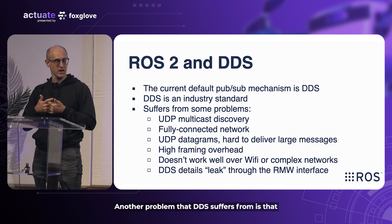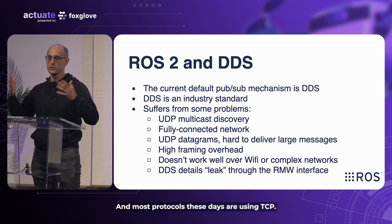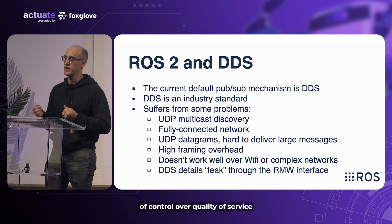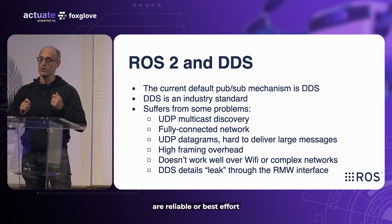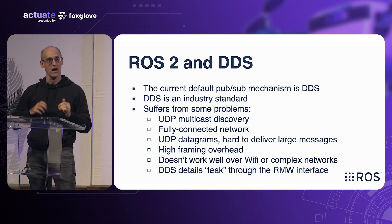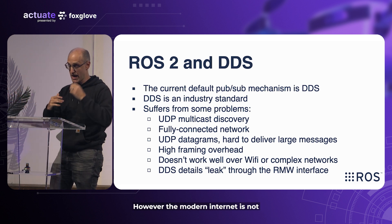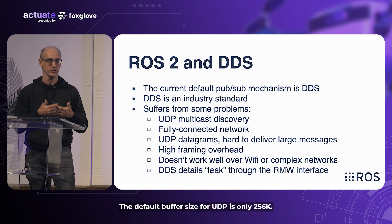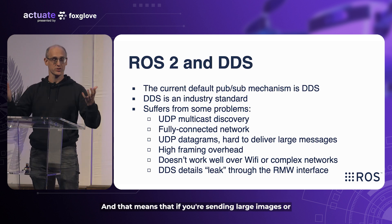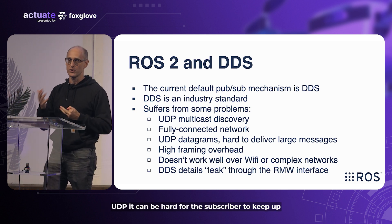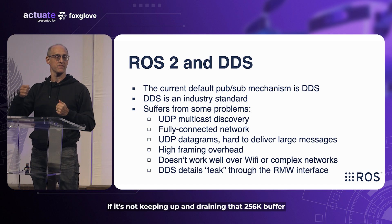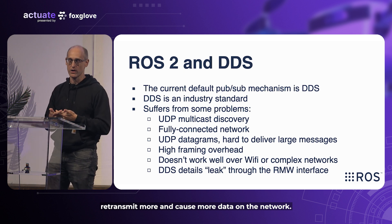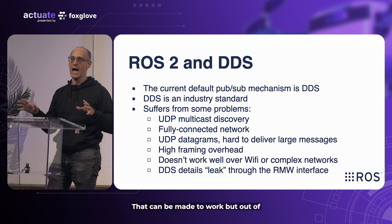Another problem is that DDS uses UDP datagrams to deliver data. Most protocols today use TCP, but DDS uses UDP because it gives control over quality of service — it can determine whether things are reliable or best effort. However, the modern internet is not well optimized for UDP. On Linux, the default buffer sizes for UDP is only 256K. If you're sending large images, point clouds, or other large data, it can be hard for the subscriber to keep up. If it can't drain that 256K buffer fast enough, you'll start losing data and have to retransmit, causing more network traffic. That's all tunable and can be made to work, but out of the box it doesn't work that well.